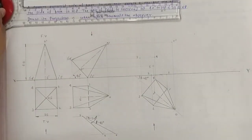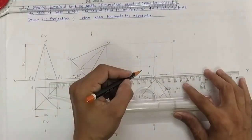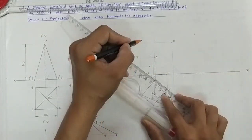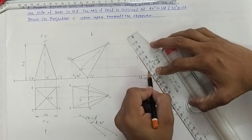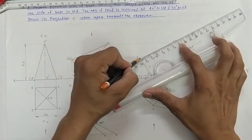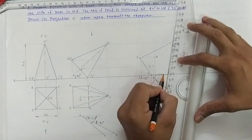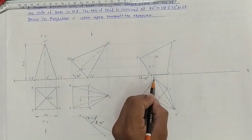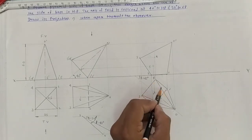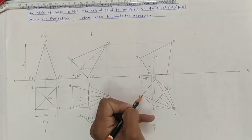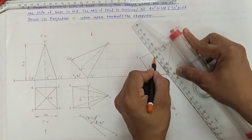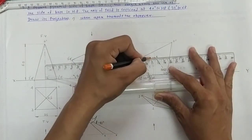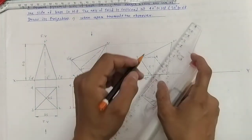Now consider the case of visibility. First of all, draw the outer portion of the object — it should be visible lines. So draw 1 to 2 as a visible line. Again, 2 to 3 is a visible line, 3 to O is a visible line, and O to 1 is also a visible line. Now the last point is 4. All lines passing through point 4 are invisible lines. So 4 to 1 and 4 to 3 are invisible lines, and 4 to O is again an invisible line.